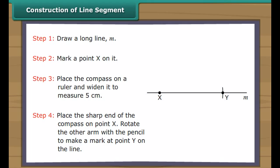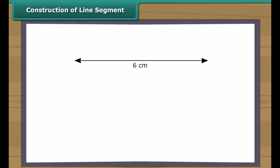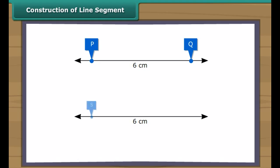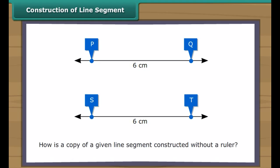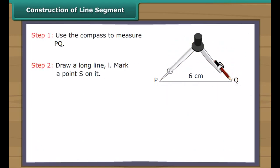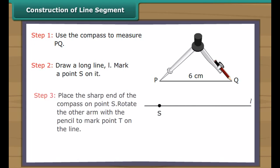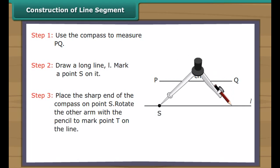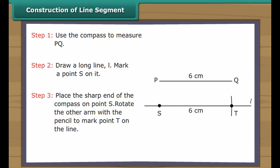We have a line segment XY which is five centimetres long. Suppose a six centimetre long line segment PQ is given and we want to create another line segment ST of the same measurement. How do we do it without using a ruler? Use the compass to measure PQ. Draw a long line L and mark a point S on it. Place the sharp end of the compass on point S and rotate the other arm to mark point T on the same line. We have a line segment ST which is a copy of the line segment PQ.